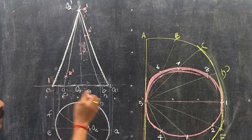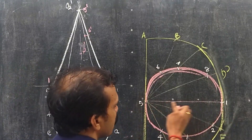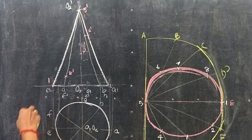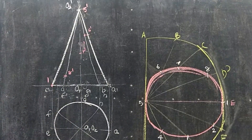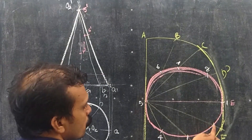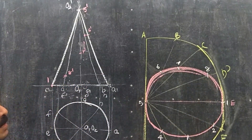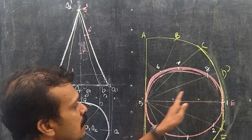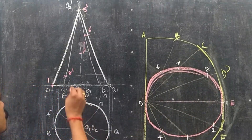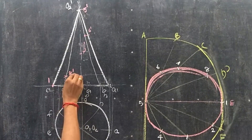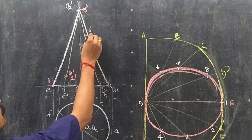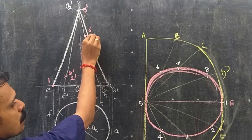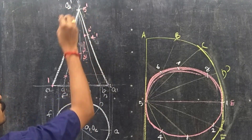Point 1 lies on generator E, so this will be 1-dash. Points 2 and 8 are at the same distance — 8 is on generator D and 2 is on generator F, giving 2-dash. Similarly we obtain 3-dash and 4-dash.